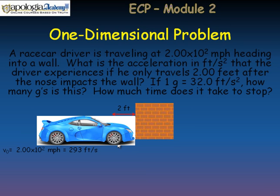2 feet of distance by the time that nose impacts the wall. After that 2 feet, do we know anything else? Well, we know the final velocity. This is a crash. And that final velocity is going to be zero.